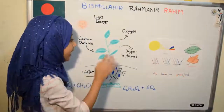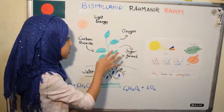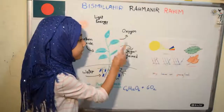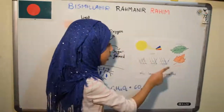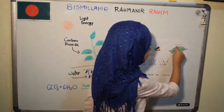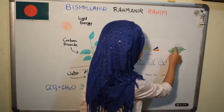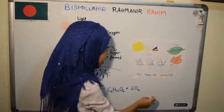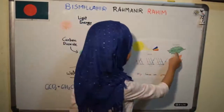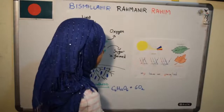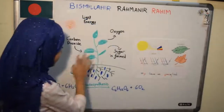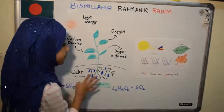Photosynthesis happens only in the leaves, nowhere else. Because? Because there is a green pigment which is called chlorophyll, on the leaves. And in the winter, this process stops — it doesn't happen.